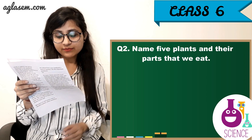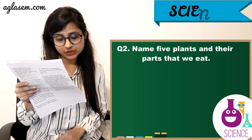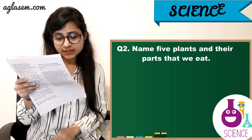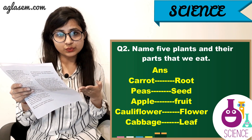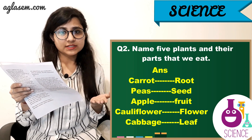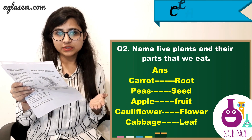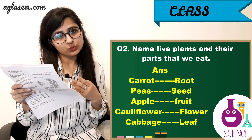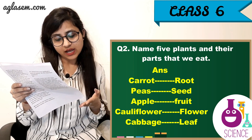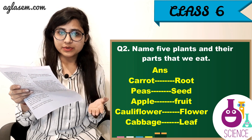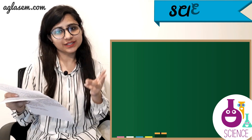Question number 2: Name 5 plants and their parts that we eat. The answer is: Carrot — we eat roots. Peas — we eat seeds. Apple — we eat fruit. Cauliflower — we eat flower. Cabbage — we eat leaves.